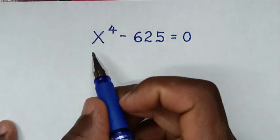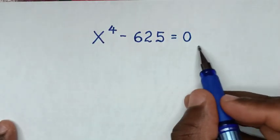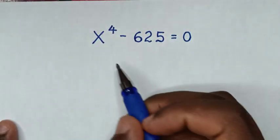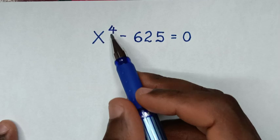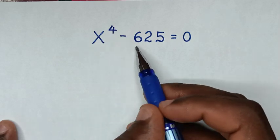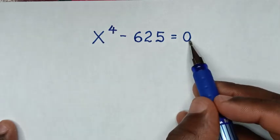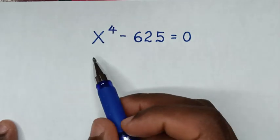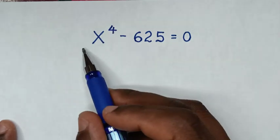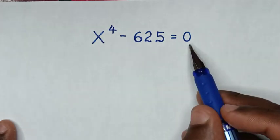Hello, you are welcome to solve this math problem which is x to the power 4 minus 625 is equal to 0, to find the values of x from this equation.